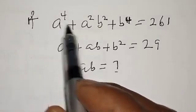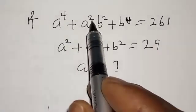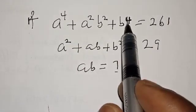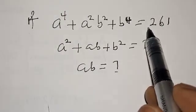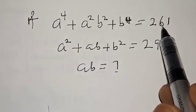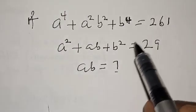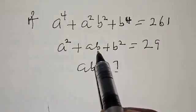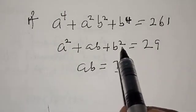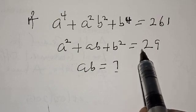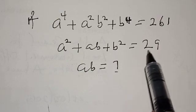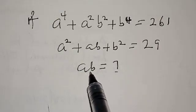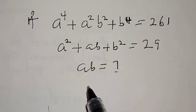If a raised to power 4 plus a squared b squared plus b raised to power 4 is equal to 261, and a squared plus ab plus b squared equals 29, then find the value of ab.